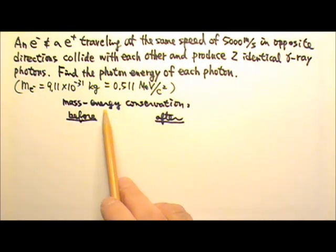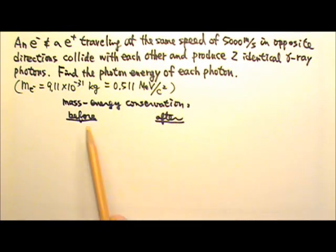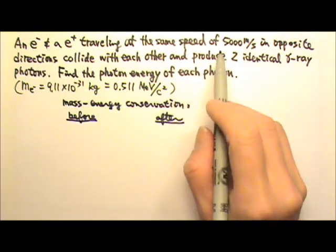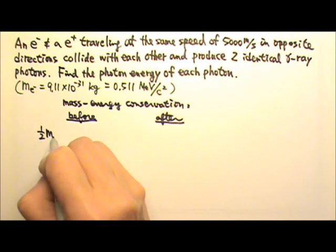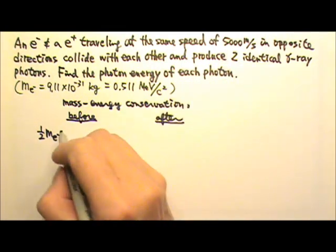Again, we will use mass energy conservation. Before the collision, the electron and positron both have one-half mv squared. So we have one-half m times v squared.